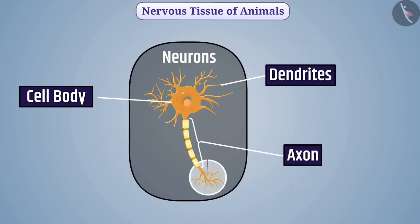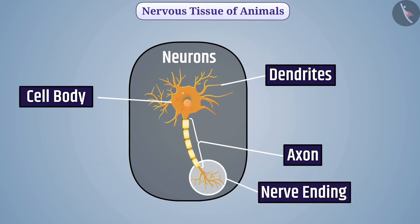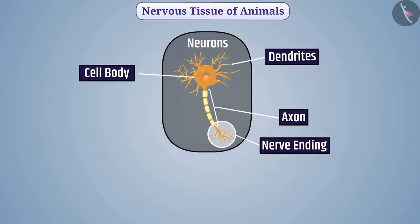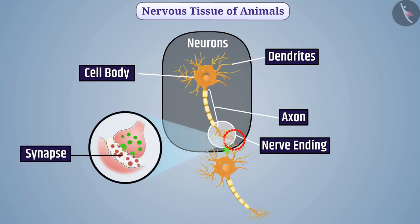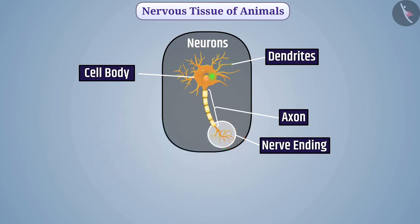The terminal end of the axon is called the nerve ending. The dendrite transmits the stimulus to the cell body, and through the cell body and axon, the stimulus reaches the terminal end of the nerve, from where it reaches the dendrites of another neuron. The space between the end of one neuron and the dendrites of another neuron is called a synapse. The stimulus crosses this synapse and reaches the dendrites of the next neuron.